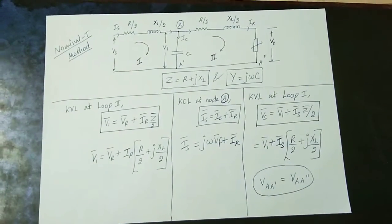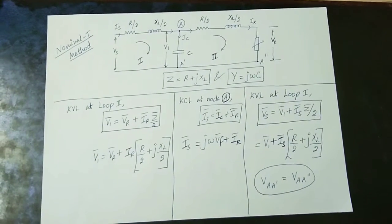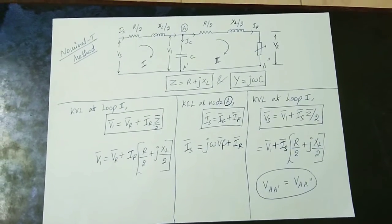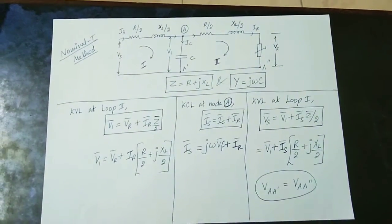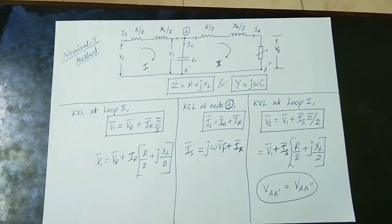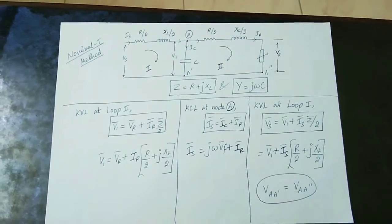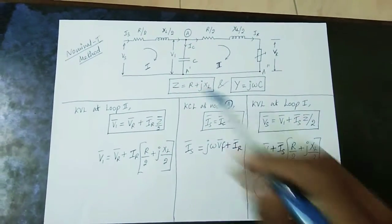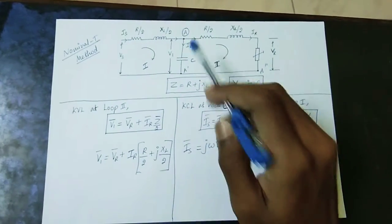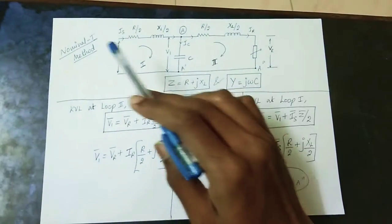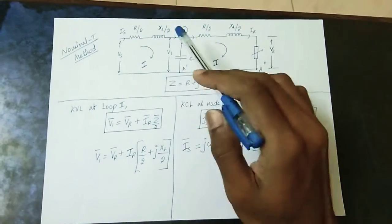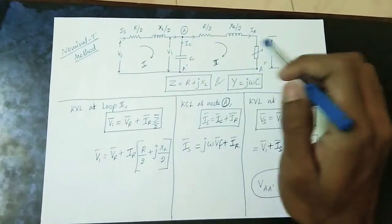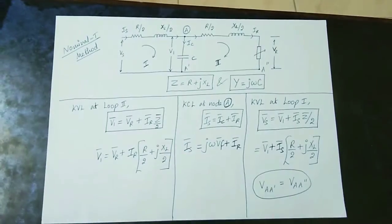What we will talk about is a type of medium transmission line. We will also talk about the method of nominal pi, and specifically the method of nominal T, which has a T-shape structure with vertical and horizontal components.